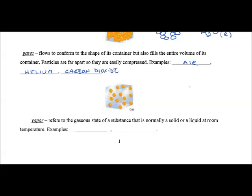The gas phase, we show as circles far apart from each other. And they are in constant motion. So if we see H2O with a G, we are talking about water in the gas phase. Water in the gas phase has a special name. It's called a vapor.